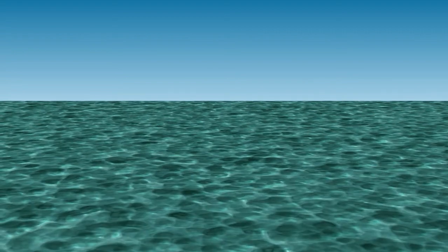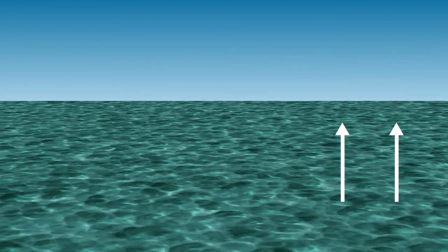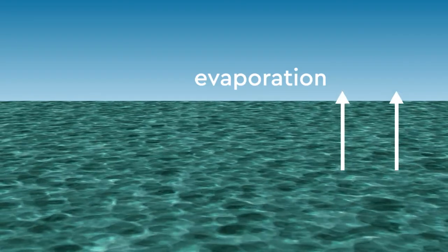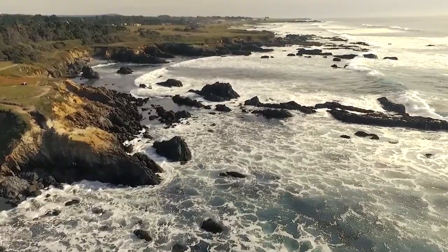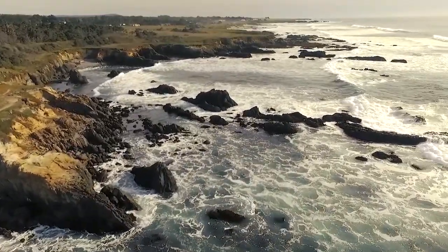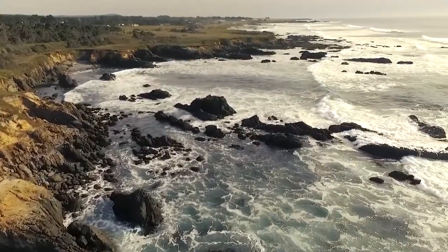Here is a water cycle diagram. We start with evaporation. As the sun heats up, water evaporates from lakes and oceans to form water vapor. Water vapor is water as a gas.